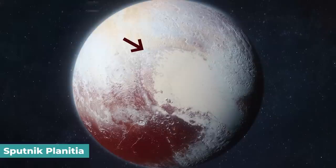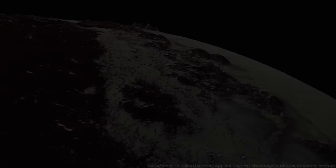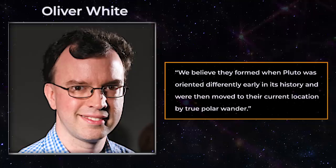To get these conclusions, they thoroughly investigated Pluto's mass distribution. They also discovered surface realignments while studying Sputnik Planitia, a heart-shaped feature on Pluto's surface. In Pluto's current orientation, we're seeing signs of ancient landscapes that formed in places and ways we can't really explain, said Oliver White, a New Horizons co-investigator from the SETI Institutes in Mountain View, California. We believe they formed when Pluto was oriented differently early in its history and were then moved to their current location by true polar wander, White added.